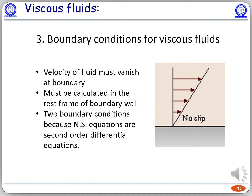Boundary conditions for viscous fluids state that the velocity of the fluid must vanish at the vicinity of a boundary wall in the rest frame of the boundary wall. For viscous fluids, there are two boundary conditions: the normal component and the parallel component of velocity at the surface must both vanish. This is because the Navier-Stokes equations are second-order differential equations, while Euler's equation is a first-order differential equation — therefore, in ideal fluids, we have only one boundary condition.